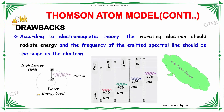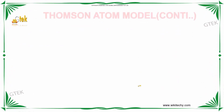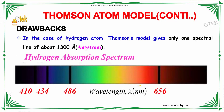Talking about the drawbacks of the Thomson atom model: according to electromagnetic theory, the vibrating electron should radiate energy, and the frequency of the emitted spectral line should be the same as the electron's frequency. The electrons move from a low-energy orbit to a high-energy orbit, and as an electron moves from one energy orbit to another, radiation is emitted. In the case of the hydrogen atom, the Thomson model gives only one spectral line of about 1300 angstrom, but we observe lines beyond 1300 angstrom in the absorption spectrum.